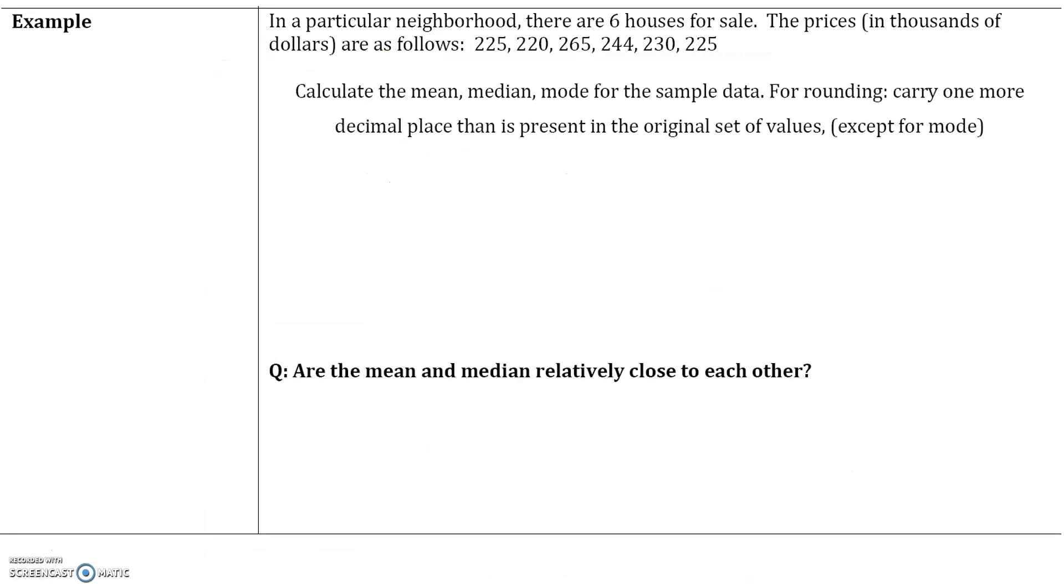Here's an example. In a particular neighborhood, there are six houses for sale. The prices in thousands of dollars are as follows: 225, 220, 265, 244, 230, and 225. We want to calculate the mean, median, and mode for the sample data. Let's start with the mean.